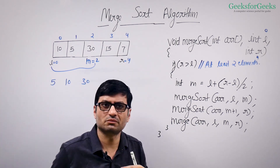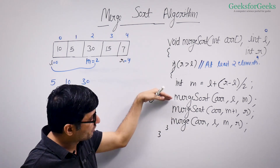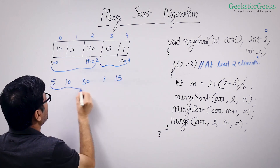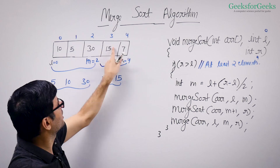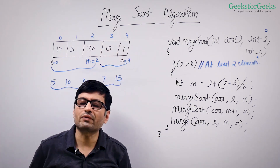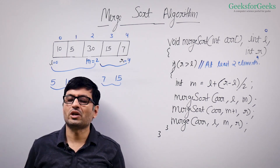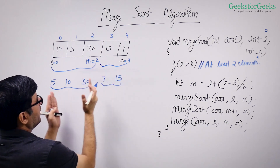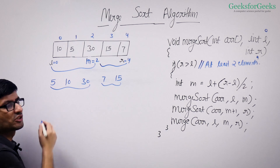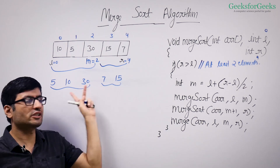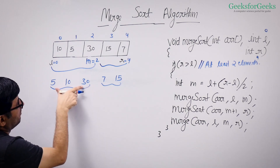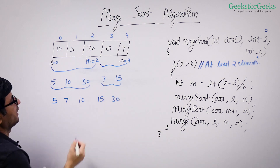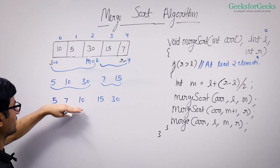We recursively sort the left half and after that we recursively sort the right half, so we get 7 and 15. These two sorted sub-arrays of the input array are produced by these two recursive calls. After sorting these two sub-arrays, we call the merge function. The merge function takes this half and this half and merges them. It merges these two sorted sub-arrays of our input array and we will get 5, 7, 10, 15, 30 — a sorted array. So our input array is modified to this sorted result.